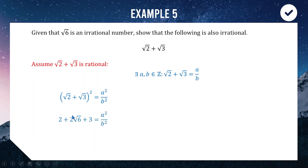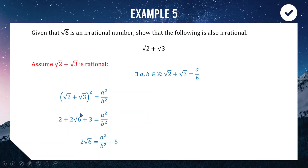Squaring both sides using the perfect square expansion: 2 + 2√6 + 3 = a²/b², which simplifies to 5 + 2√6 = a²/b². Our goal is to make √6 the subject so we can show it equals a rational fraction, contradicting the given fact that √6 is irrational. Subtracting 5 and combining: 2√6 = a²/b² − 5 = (a² − 5b²)/b².